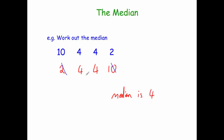So if you get the same number in the middle, you just choose that number. You can test it using the method of adding and halving: 4 plus 4 is 8, and half of that is 4. So if you get the same number in the middle twice, you just choose that number.